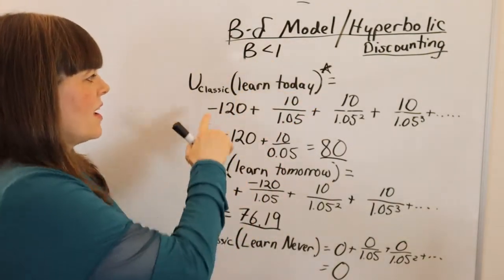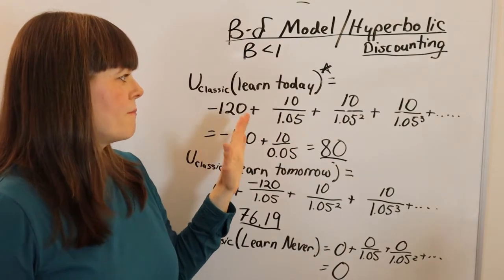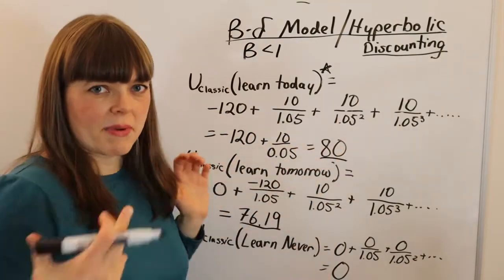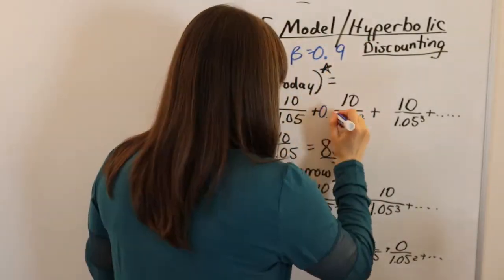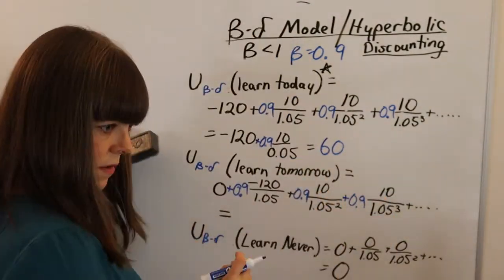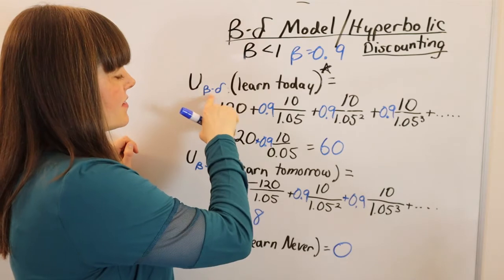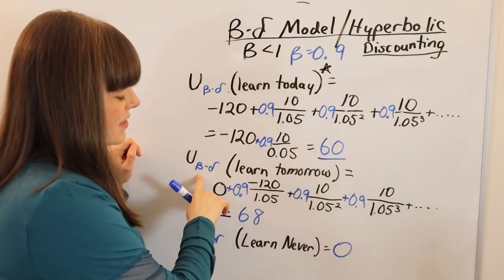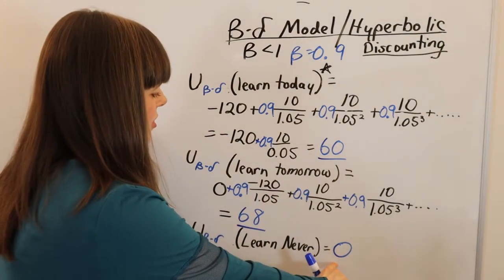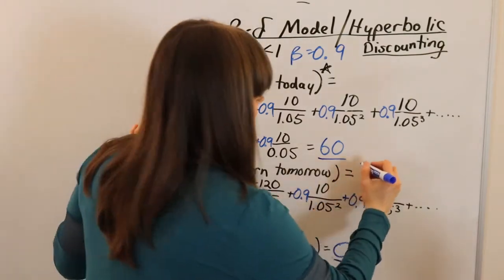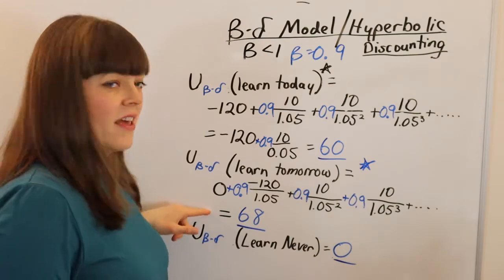Let me walk through these same numbers except instead of a classic discounter, we have a beta-delta discounter. I'll use the 5% rate of return, but for beta-delta we're just going to stick a beta in front of each of these future terms. The beta I'm going to use is 0.9, interpreting beta as a haze over the future. Redoing the numbers using beta equals 0.9, we find that for the beta-delta discounter the utility from learning today is 60, the utility from learning tomorrow is 68, and the utility from learning never is zero. In which case, the best option for them is to learn it tomorrow — they choose the utility of 68, they choose to learn it tomorrow.